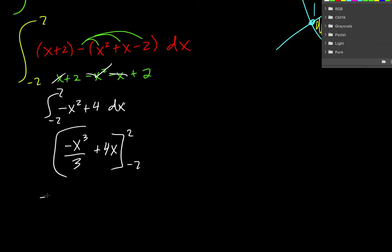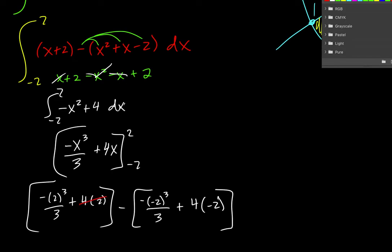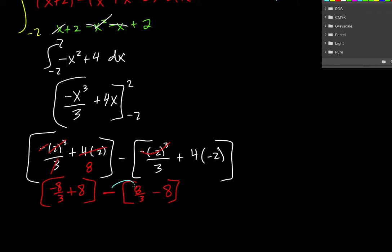So if I plug in a 2 right here... And I subtract that. And now I plug in a negative 2. So this becomes 8. This becomes negative 8 thirds. So I have negative 8 thirds plus 8. Minus. This will be negative 8 times a negative, so it's positive 8 thirds. And this is going to be negative 8. Distribute the negative. Negative 8 thirds plus 8. And I have negative 8 thirds over here. Plus 8.